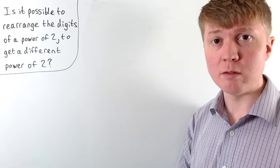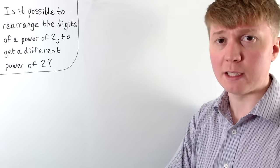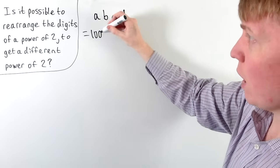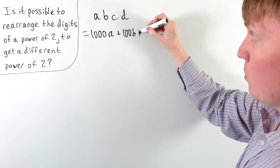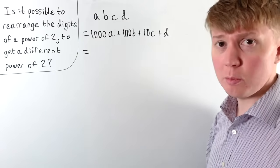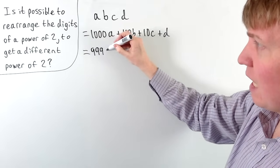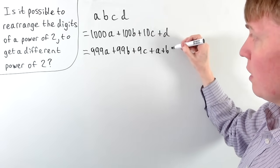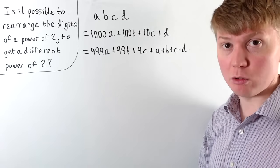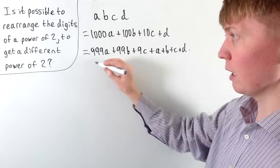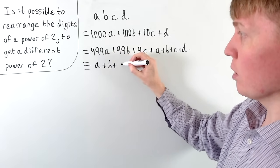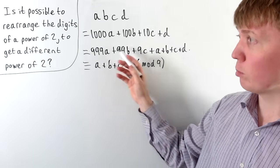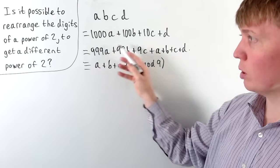We'll use a property related to the divisibility by 9 rule, illustrated with a simple example. Take a four-digit number whose digits are a, b, c, and d. Its actual value is 1000a + 100b + 10c + d. We can rewrite this as 999a + 99b + 9c, plus a + b + c + d. Those first three terms are all multiples of 9, so this number is equivalent to a + b + c + d modulo 9 — a number is equivalent to its digit sum modulo 9.